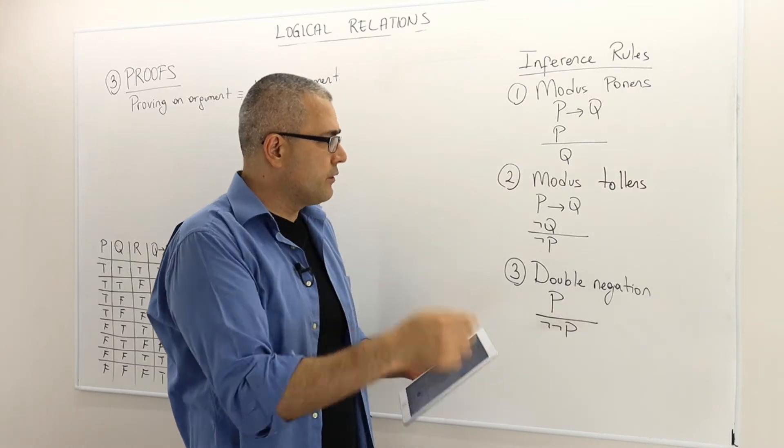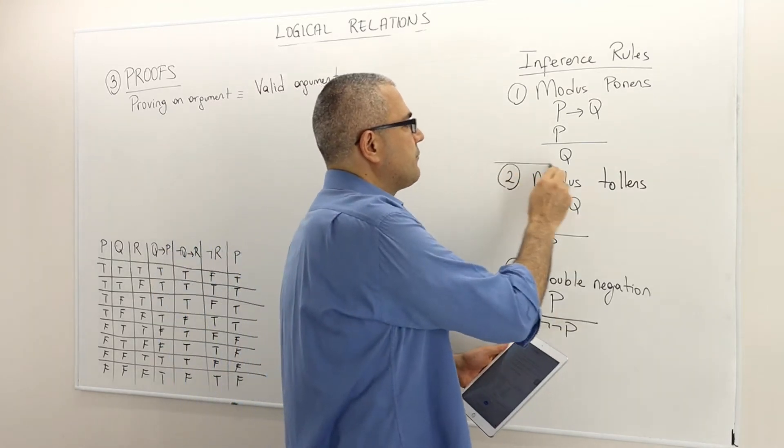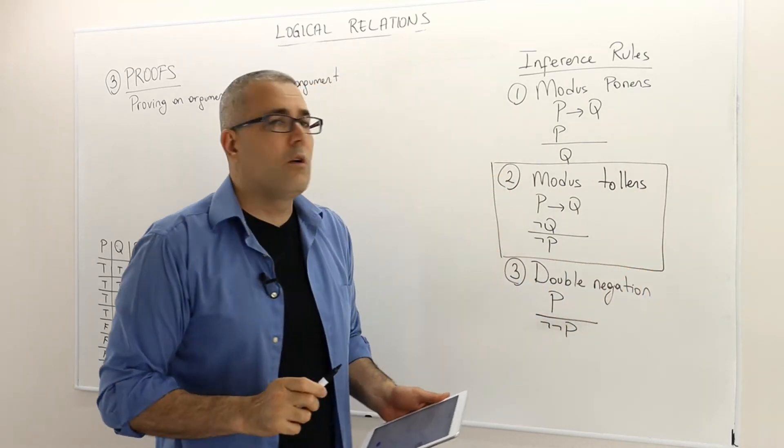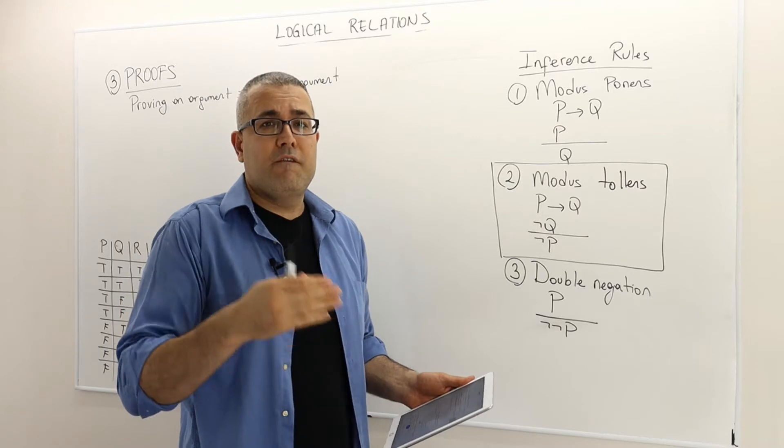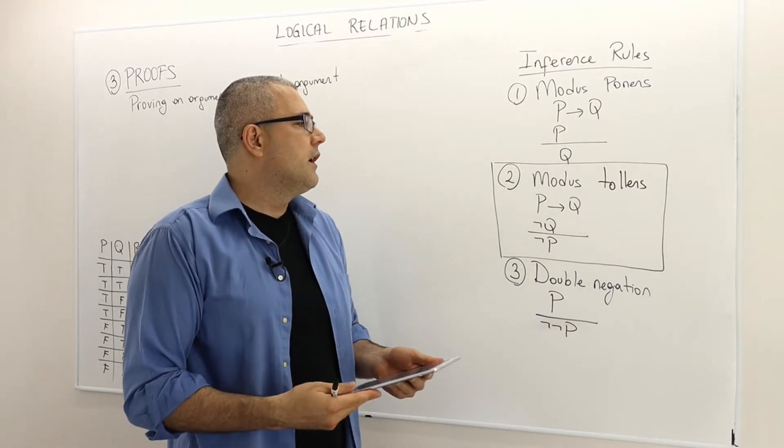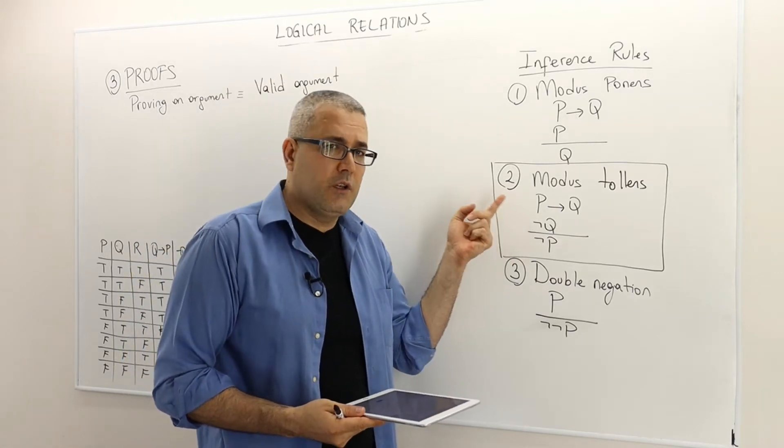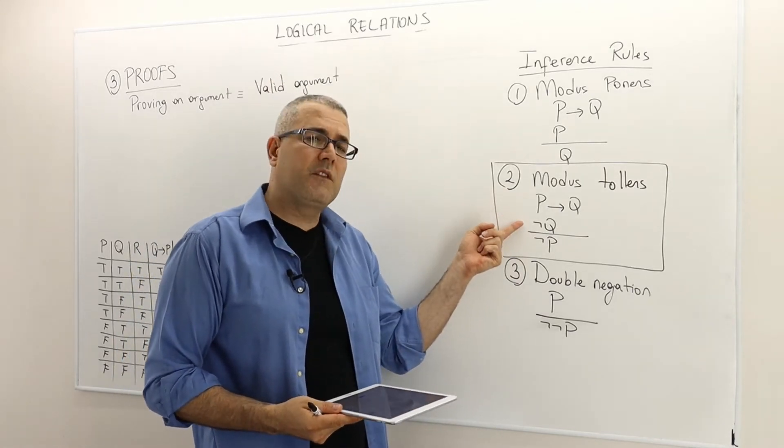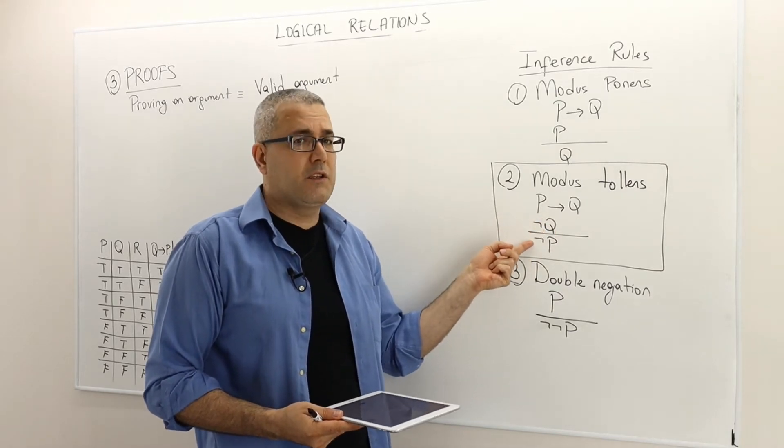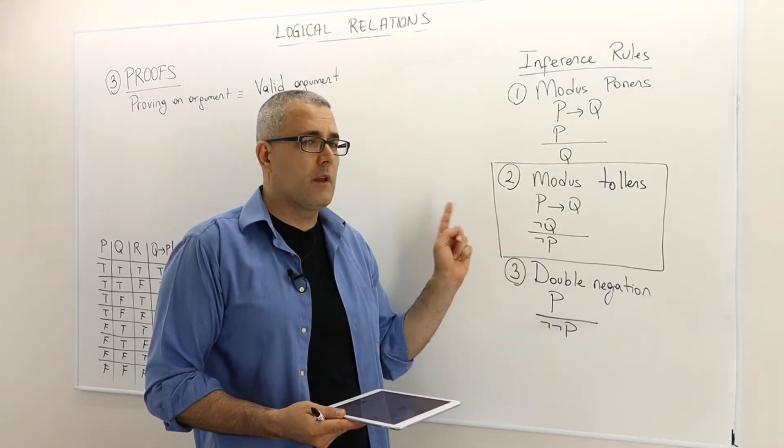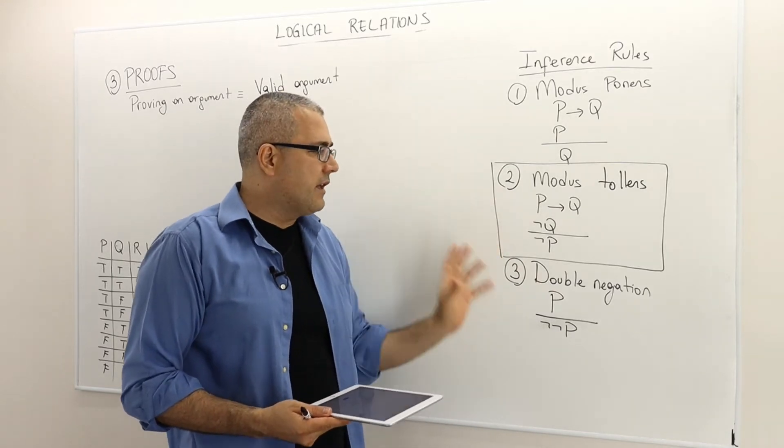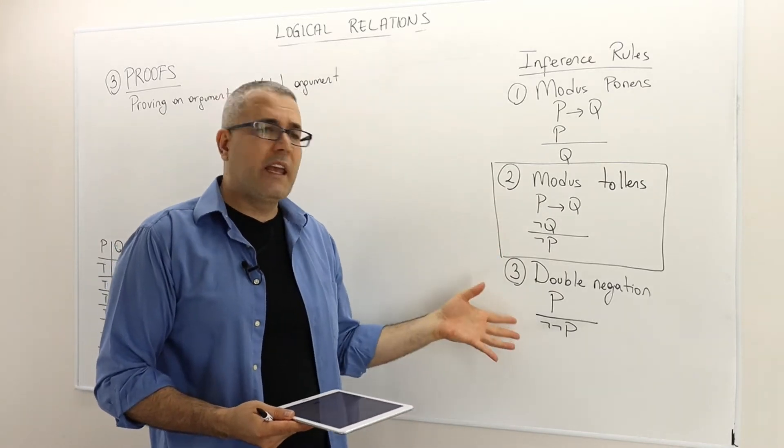The second inference rule, or the second shortcut, a valid argument, is called modus tollens. It says, if your premise P implies Q is true, and if your premise not Q is true, then not P must be true as well. So this is a valid argument.